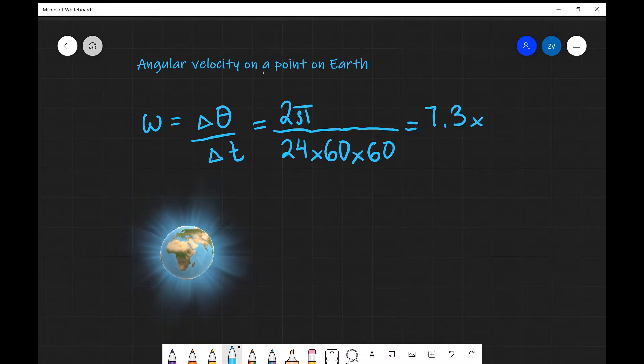Let's use two significant figures in this case, so 7.3 multiplied by 10 to the power of minus 5 radians per second.